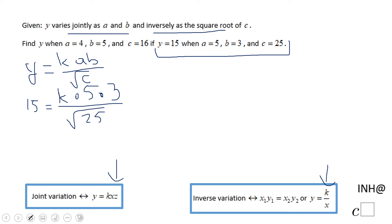This can be simplified as 15 equals k times 5 times 3, and the square root of 25 is 5. If you notice, these 5s cancel out, so we have 15 equals k times 3, which gives us k equals 5. That's the value of k, so now we can go to the second step.